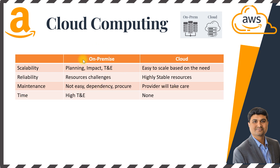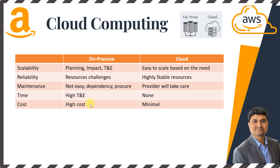The time required to make any changes to on-premise requires really high time and energy, whereas in cloud you don't have to worry — it's all taken care of by the cloud service provider. Cost is another important factor. On-premise infrastructure requires a really high cost, whereas on the cloud it's very minimal. Since you can scale down or scale up, or if you want to do any POC, it's very easy to spin up a new resource on cloud. Whereas on-premise, a POC requires high cost planning and may impact your current application.